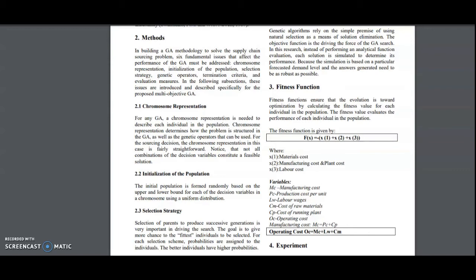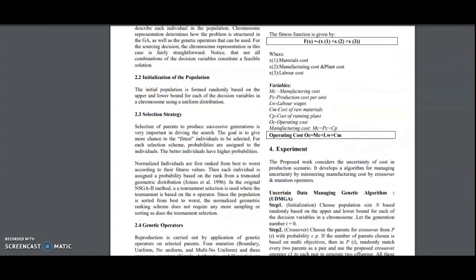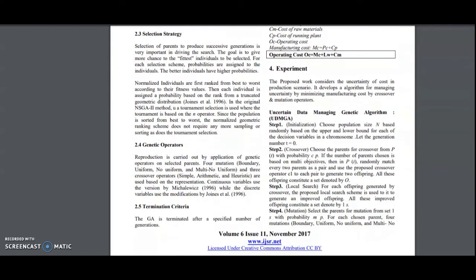We are calculating the operating cost OC = MC + LW + CM, where MC stands for manufacturing cost, which is taken from the production cost and the cost of running the plant, LW is the labor wages, and CM is the cost of raw materials. This is the fitness function we are using.